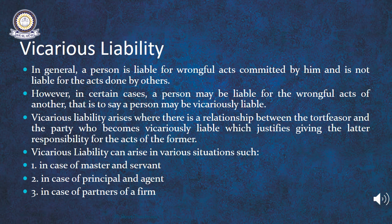In general, there are some situations where tortious liability can arise. The first is the master and servant relationship, which we will look into in detail in this presentation. The next is the principal and agent relationship. And in case of partners of a firm, a partner can become vicariously liable for the acts of the other partners. We will basically discuss the two aspects: master and servant relationship, and principal and agent relationship.